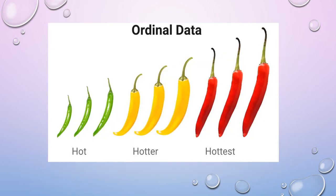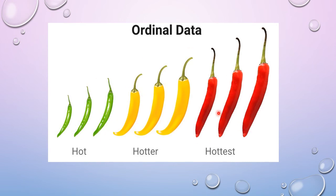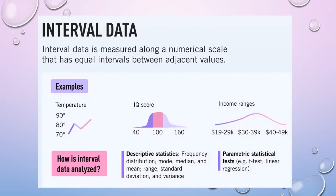As an example of ordinal data, consider chili peppers: hot, hotter, and hottest. Comparing green and yellow chilies, yellow is hotter than green, and among all, red chilies are the hottest. This is a nice visual example of ordinal ranking. We can also use ANOVA — analysis of variance — to compare more than two groups with this kind of data.